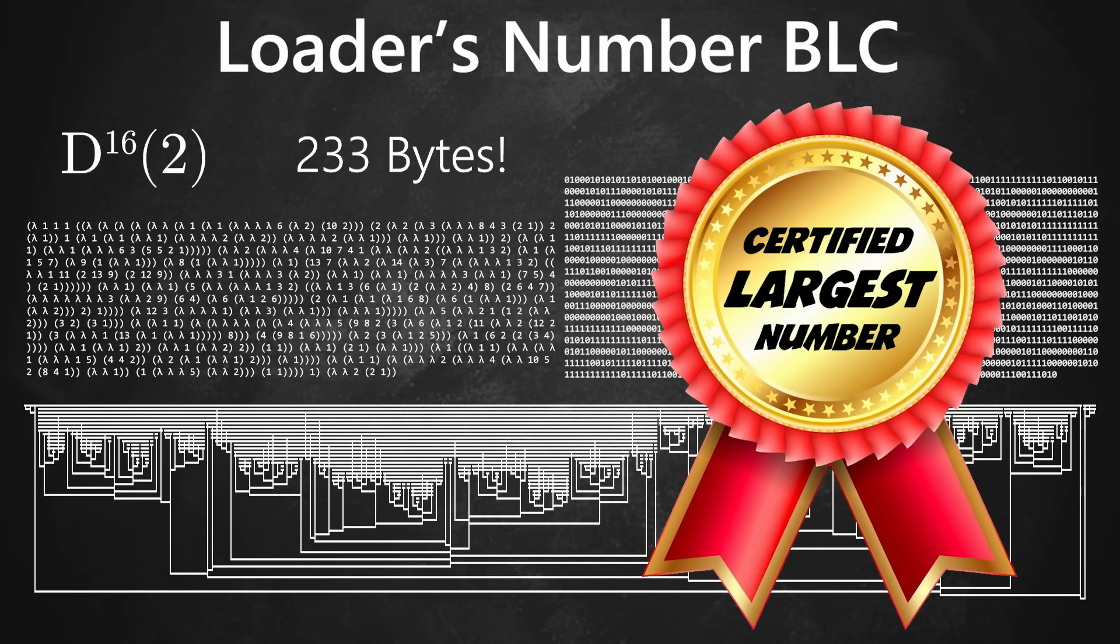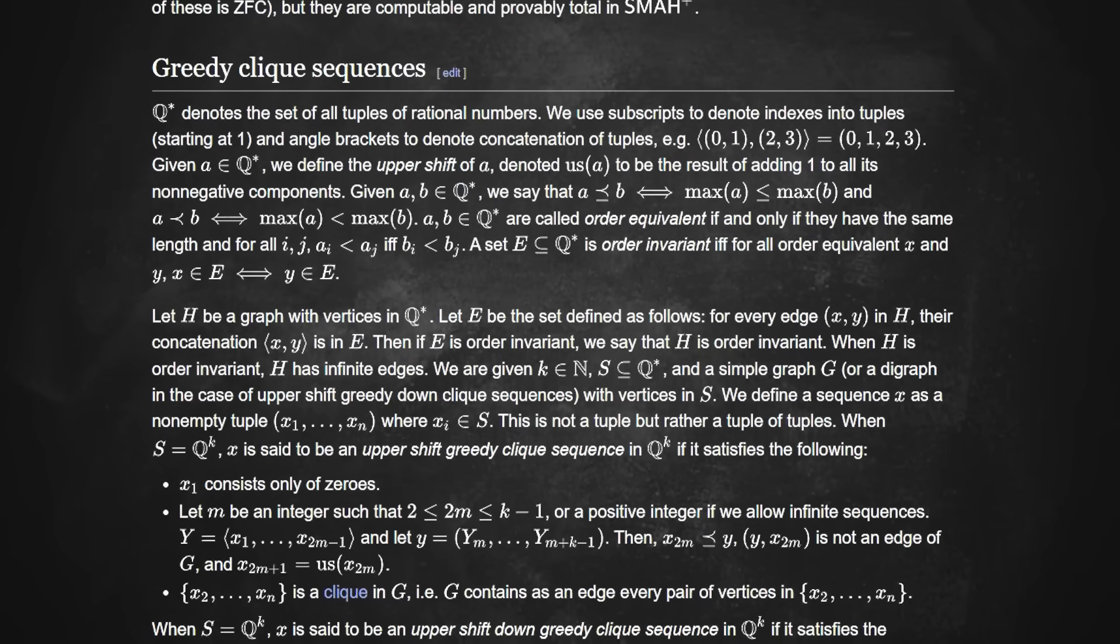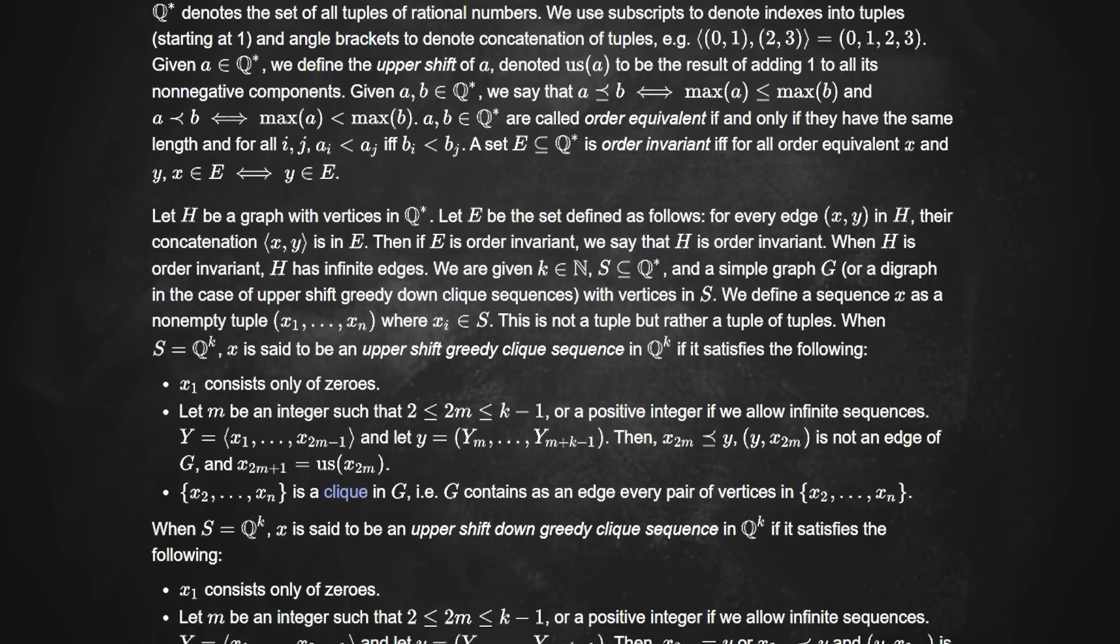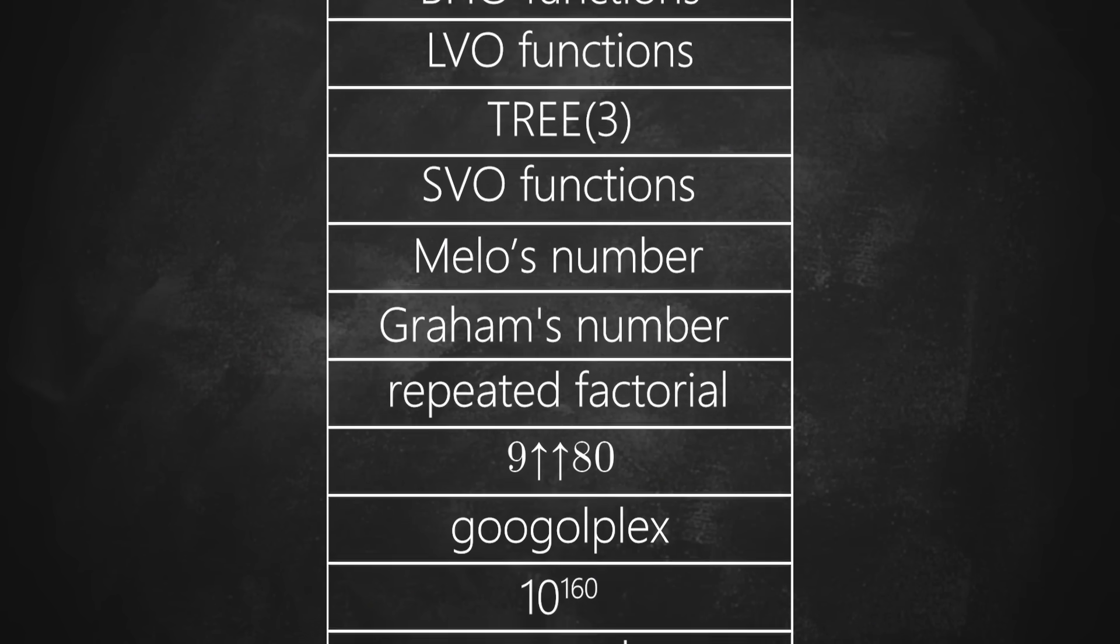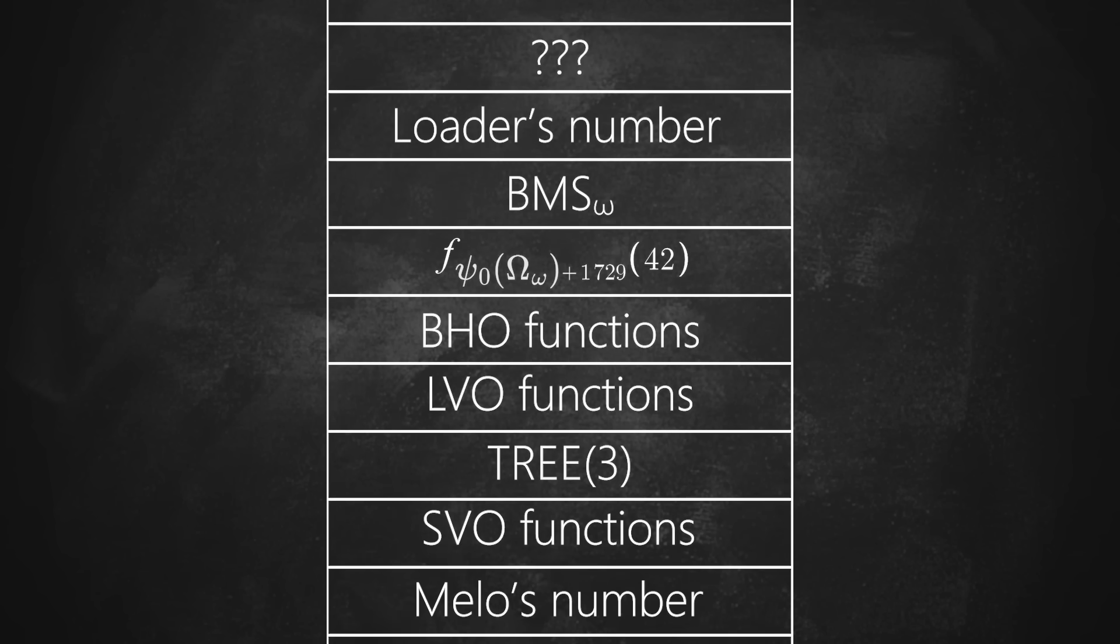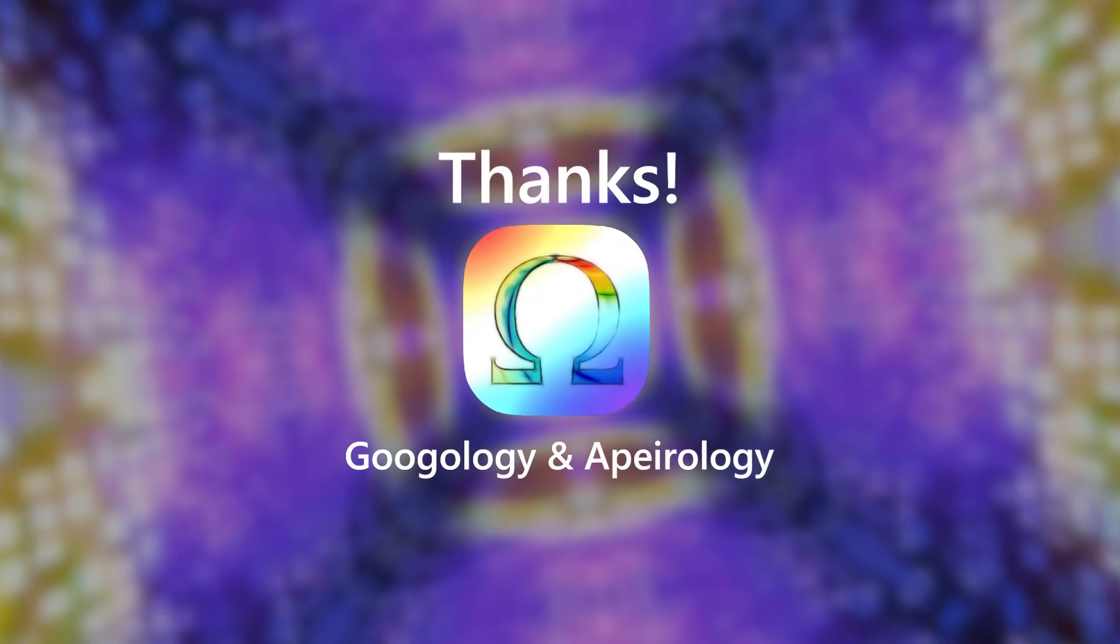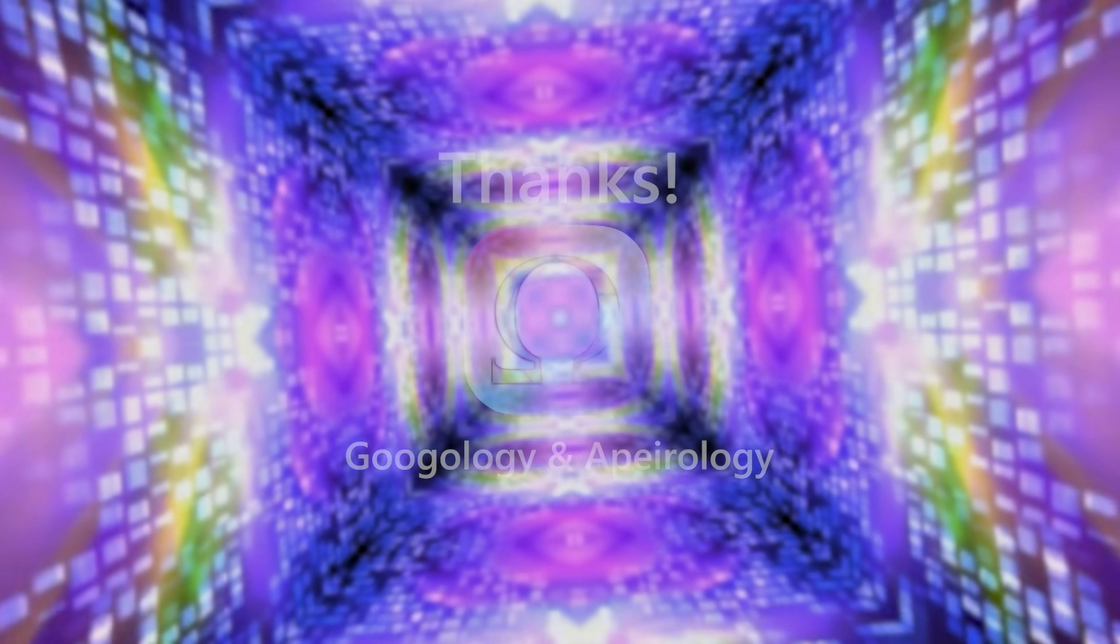For real this time. There are bigger proof-theoretic ordinals for systems like ZFC, and some fast-growing functions like greedy click sequences are claimed to reach that growth, but none of these have been rigorously proven yet. So it looks like we're at the end of our journey, for now. That's the largest number class that's proven so far, regardless of size limitations—at least until there's some new breakthrough. I hope this is a much more satisfying answer. Huge thanks to the Googology community for helping me research this topic. And thanks for watching!